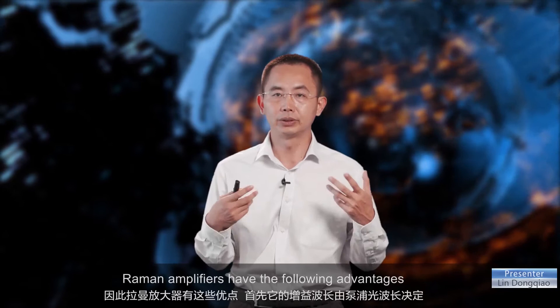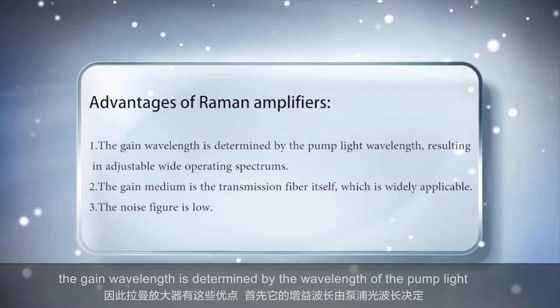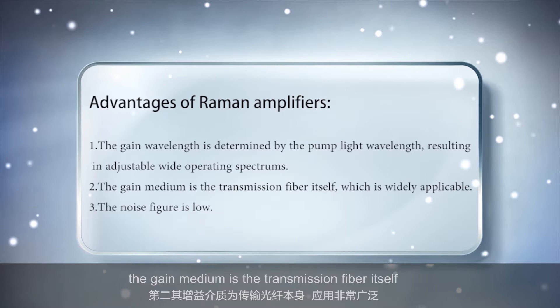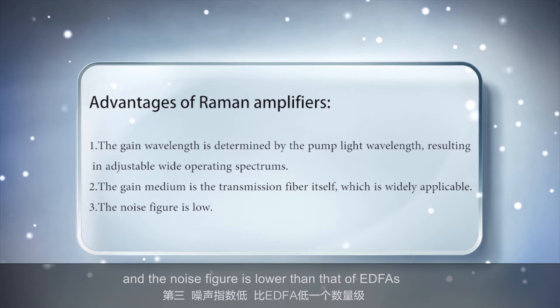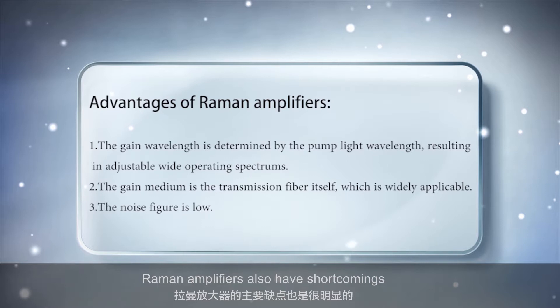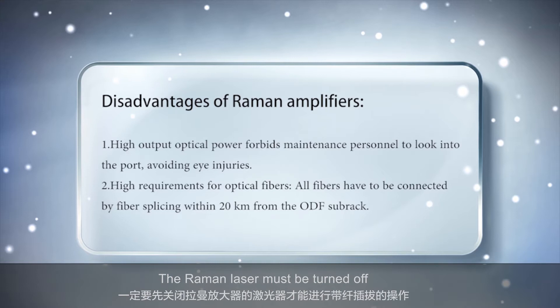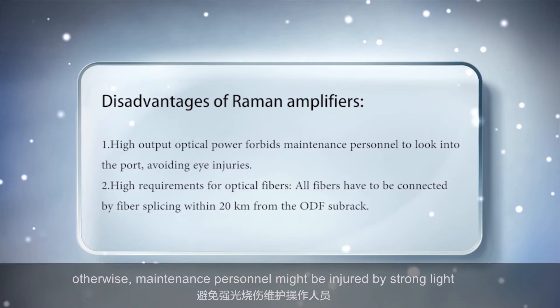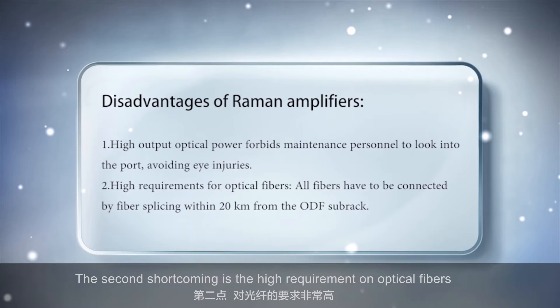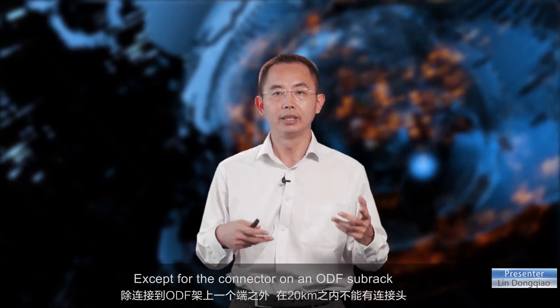Raman amplifiers have the following advantages. The gain wavelength is determined by the wavelength of the pump light, causing an adjustable wide operating spectrum. The gain medium is the transmission fiber itself, which is widely applicable, and the noise figure is lower than that of EDFAs by one order of magnitude. Raman amplifiers also have shortcomings. Raman amplifiers have a high output optical power. Maintenance personnel are forbidden to look into the optical port directly to avoid eye injuries. The Raman laser must be turned off before inserting or removing fibers. Otherwise, maintenance personnel might be injured by strong light. The second shortcoming is the high requirement on optical fibers. Except for the connector on an ODF subrack, all fibers have to be connected by fiber splicing within 20 km from the subrack.